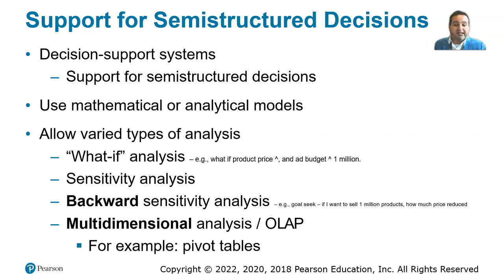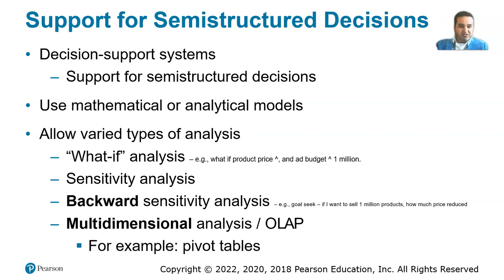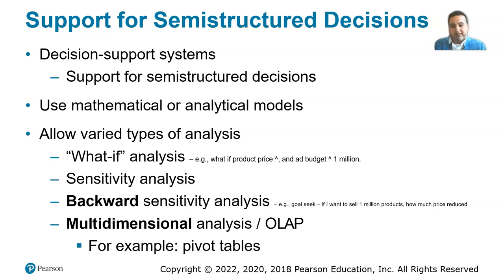Decision support systems for semi-structured decisions also include multi-dimensional analysis, or OLAP. In Tableau, for instance, the left menu shows dimensions at the top and measures at the bottom. Dimensions are categorical variables — such as region or product type — while measures are continuous variables. Multi-dimensional analysis looks similar to pivot tables.